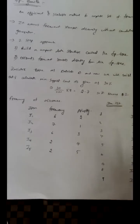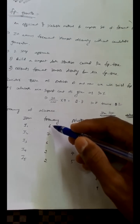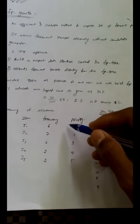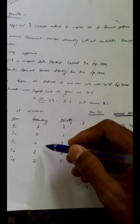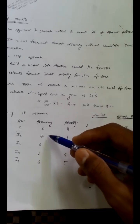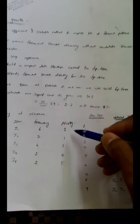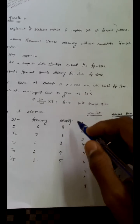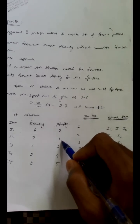In the FP Growth algorithm, first we will be calculating the frequencies for each item: i1, i2, i3, i4, and i5. The frequencies of each item are given as 6, 7, 6, and so on, based on the dataset. Then we assign priority to each item based on these frequencies — the item with the highest frequency gets the highest priority. So i2 has the highest priority, numbered 1, followed by i1 as 2, then i3, i4, and i5.